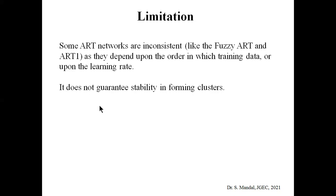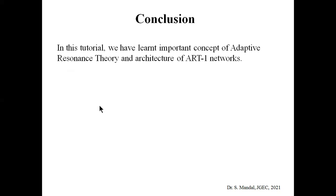These are the limitations. Coming to the conclusion: in this class, we have learned a very important concept of Adaptive Resonance Theory or ART. We also observed the architecture of the ART1 network, which is the most basic and simplest type of ART network, used mainly for pattern recognition — learning new patterns without losing already learned or stored patterns and clusters.